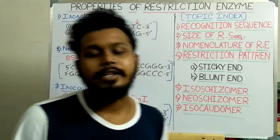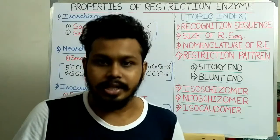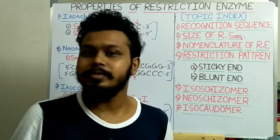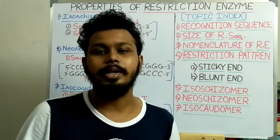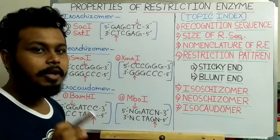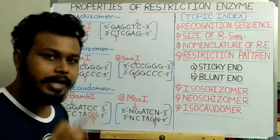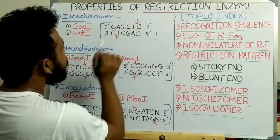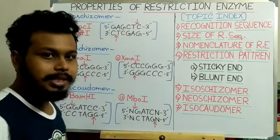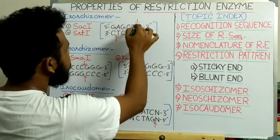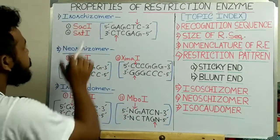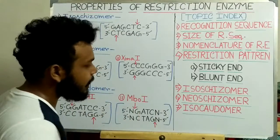First, let's discuss isoschizomers. Isoschizomers are any two restriction enzymes which came from different sources — that means they are isolated from different organisms — but they recognize the same sequence and cut in the same position. For example, these two restriction enzymes are called isoschizomers because they came from different sources but recognize the same sequence: 5' GAGCTC 3'. They both cut in the same position and produce the same 5' overhang.